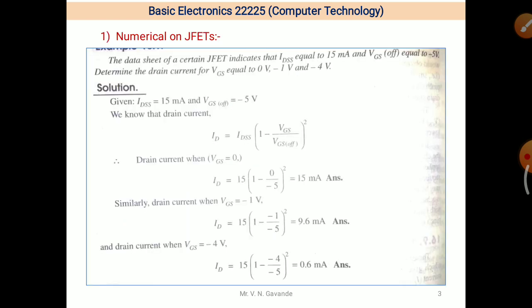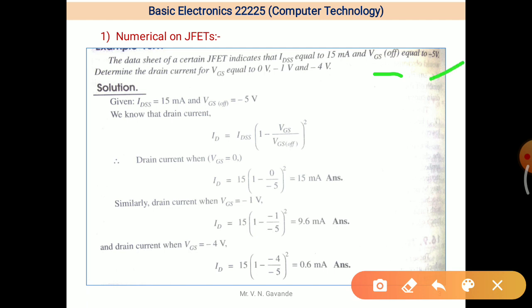This is the first numerical on JFET. The data sheet of a certain JFET indicates that IDSS equals 15 mA and VGS OFF equals minus 5 volts. Determine the drain current for VGS equals 0 volt, minus 1 volt, and minus 4 volt. Means we have to find out ID values for different values of VGS. IDSS and VGS OFF are given.